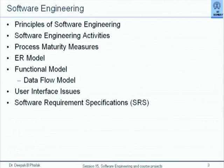We will not discuss the ER model now, but I will describe what functional models are, user interface issues, and specifically a key document called the Software Requirements Specification or SRS document. In professional projects, not a single line of code is written until the entire analysis and design work is completed. Coding actually constitutes roughly 10 to 15 percent of the total software development effort. You will do a large amount of programming work, but you must get a glimpse of these other activities.